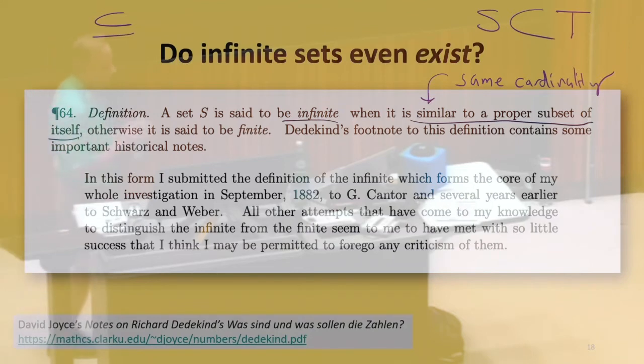So one way to think about that is, remember our definition of set cardinality was a one-to-one mapping. If we have the natural numbers, and now we're going to create a subset of natural numbers which we remove zero from, is there a bijection between those two sets? Sure. We connect zero to one, we connect...